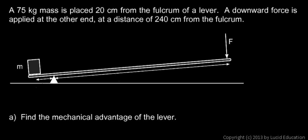In this example we're told that a 75 kilogram mass is placed 20 centimeters from the fulcrum of a lever. A downward force is applied at the other end at a distance of 240 centimeters from the fulcrum.